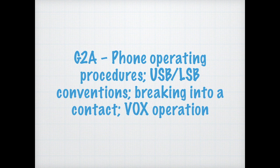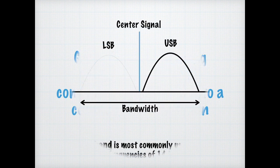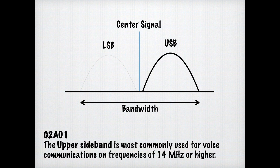Let's take a deeper dive into phone operation procedures — upper sideband, lower sideband conventions, breaking into a contact, and voice-operated relay operations, or VOX. Upper sideband is where only part of the bandwidth is used for transmission. For the exam, you need to know that upper sideband is the most common one used for voice communications on frequencies of 14 megahertz or higher.